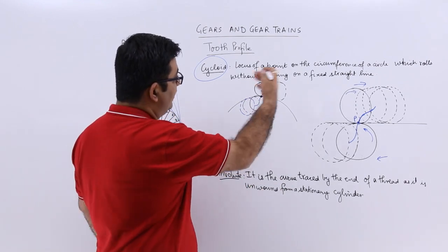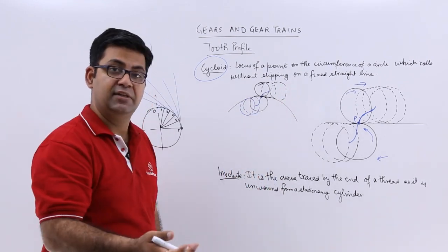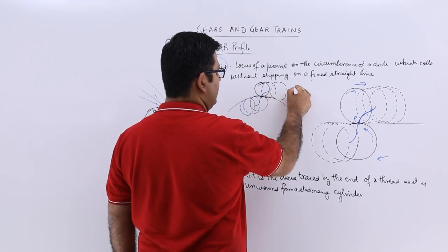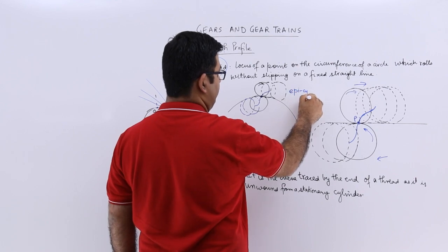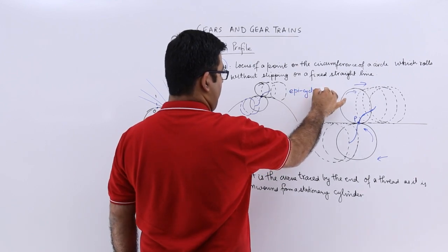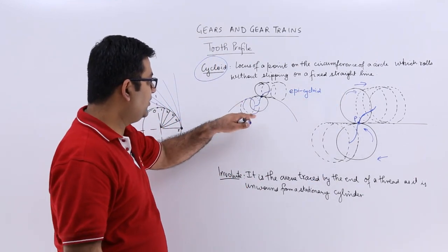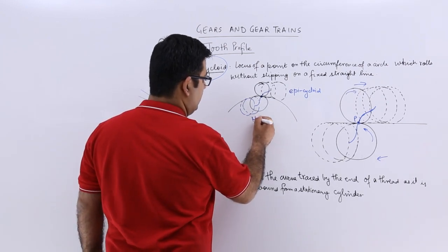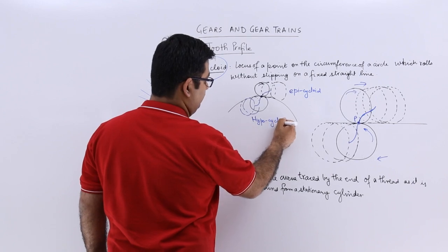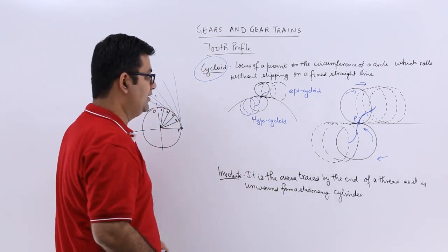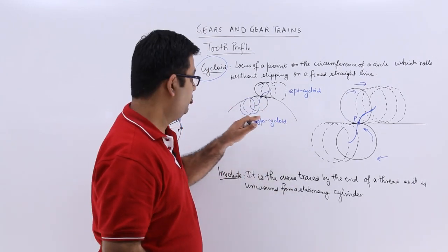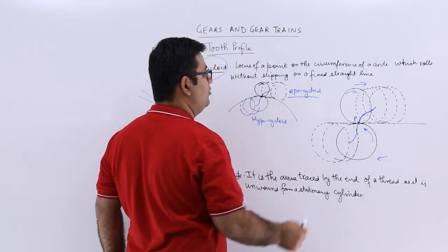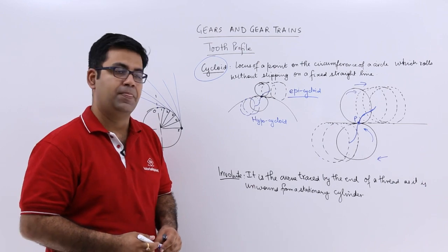So when the rolling is outside a certain circle, the curve obtained, this curve obtained is called an epicycloid. And when the curve is obtained on the inside of a circle, then it is called a hypocycloid. So let us say this is the pitch circle. Below the pitch circle you have hypocycloid and above the pitch circle you have epicycloid.